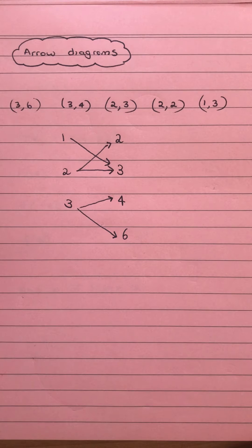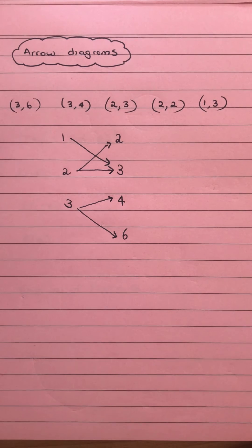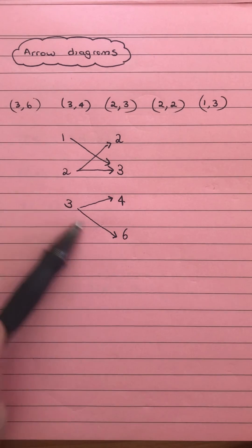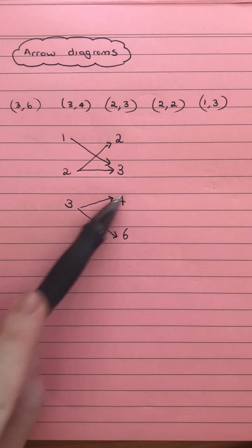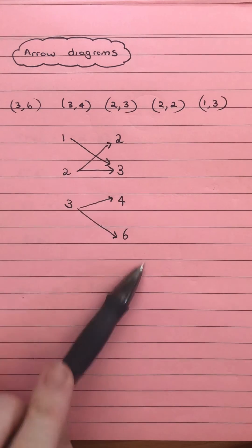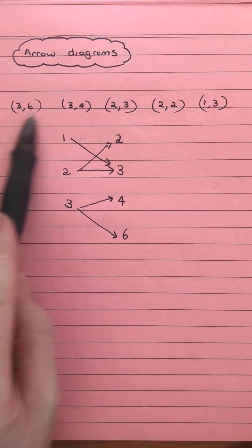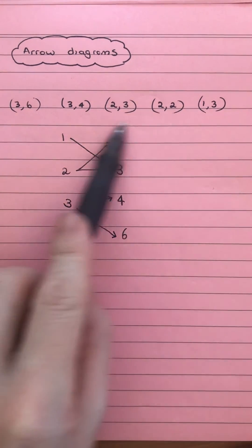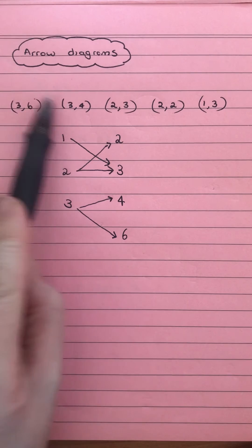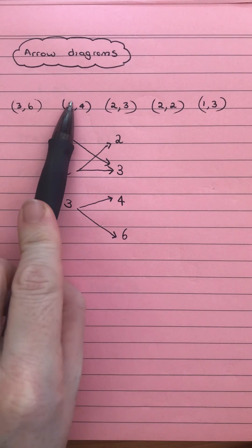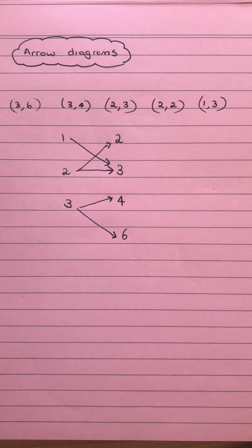We can use these to check for if it's a relation or a function as well. If it's a function we only have one y value for each x value. We can look at that and see that off the 3 and also off the 2 we've got two y values coming from there. We can also observe that from the coordinates — the fact we've got two x values there with different y values — which tells us that it is not a function.